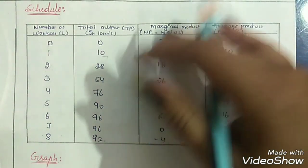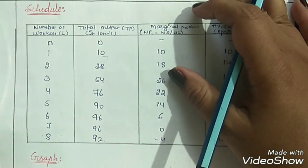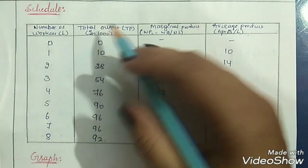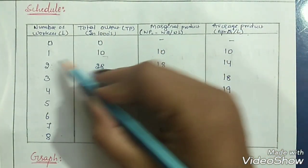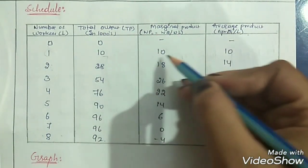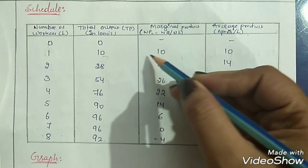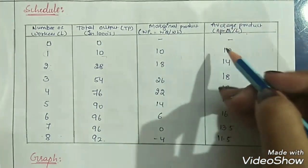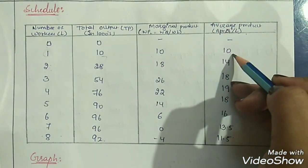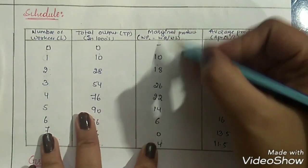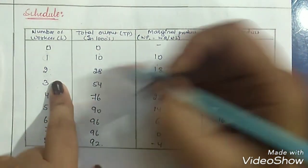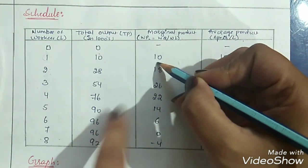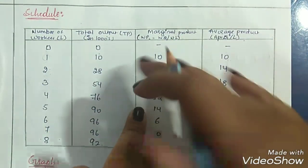Marginal product is the additional or extra product produced. For one unit of labor, the marginal product will be 10 itself, and average product will also be 10. At the second unit of labor, marginal product is 18 — earlier we produced 10 cars, now we produce 28, so the difference is 18.